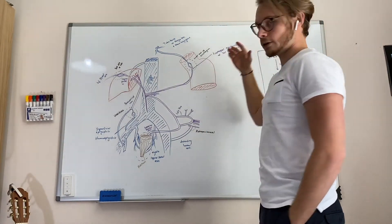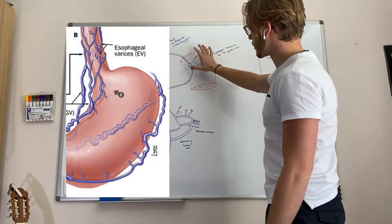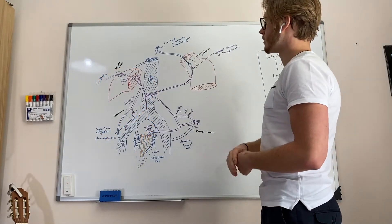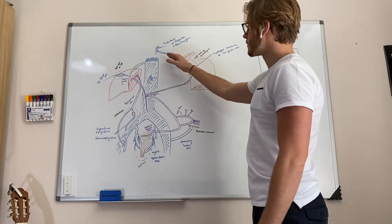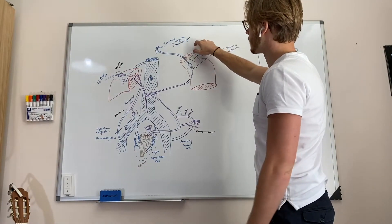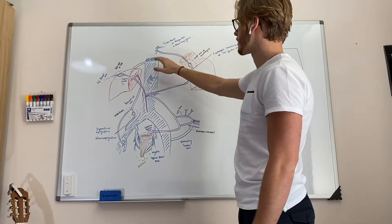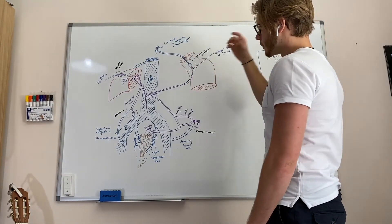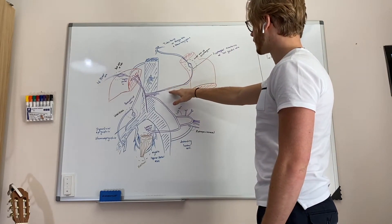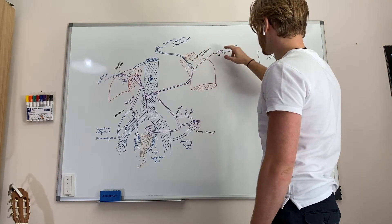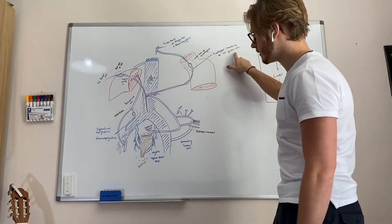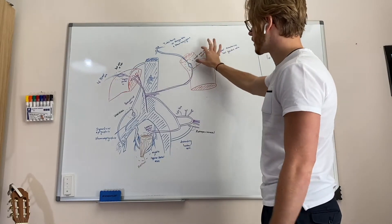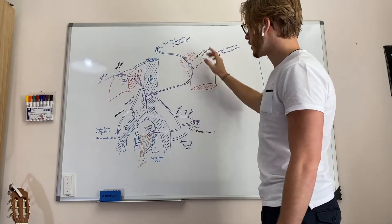The first anastomosis: the location is the lower esophagus. The esophagus goes up and it's located at the lower esophagus. The veins of the caval system are esophageal branches of the azygous and hemiazygous veins. The portal vein for this anastomosis is the esophageal branches of the left gastric vein, going up and giving off esophageal branches that anastomose with the caval branches.